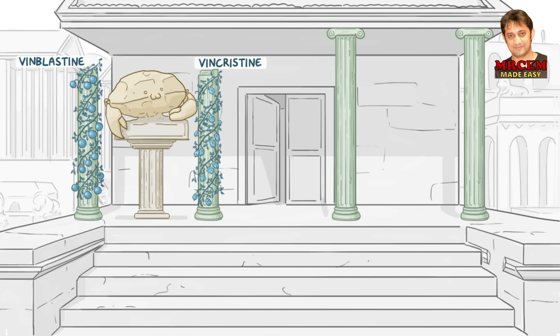Between the two pillars, there is a solid stone crab statue to help you remember both drugs are used to treat solid tumors. On top of the statue is a baby crab, because they're also used for pediatric tumors like Wilms tumor. The stone crab is carrying a giant bone club with little white crabs in the bone marrow, representing leukemia, which originates in the bone marrow.